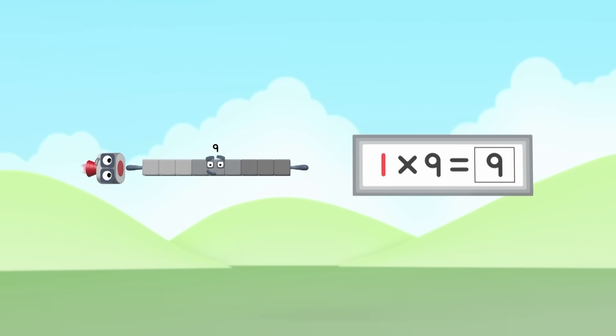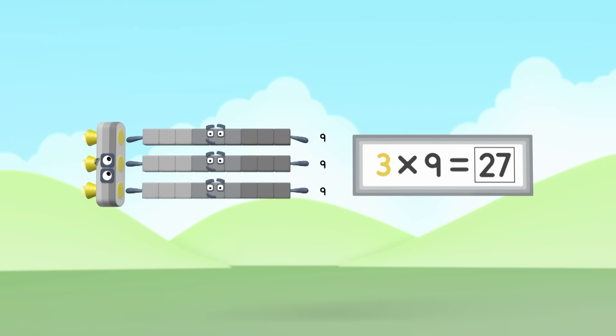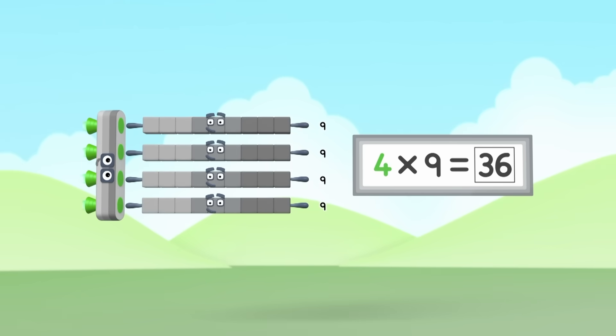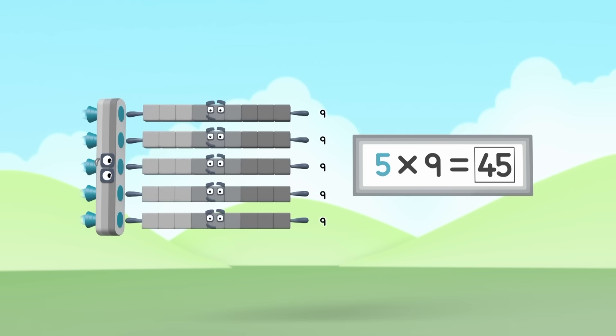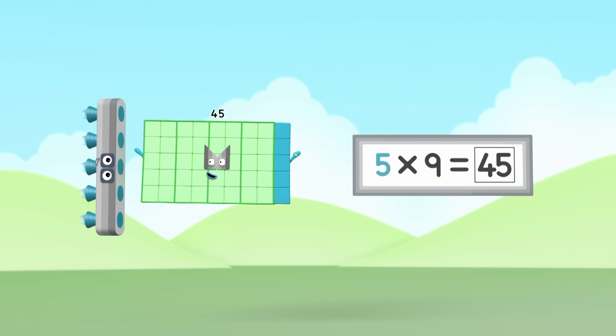1 times 9 is 9, 2 times 9 is 18, 3 times 9 is 27, 4 times 9 is 36, 5 times 9 is 45, time for 9s to shine.